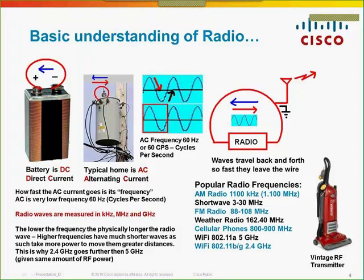If you look at the wall transformer, that's typically what you see — AC electricity around your home. If you had an oscilloscope to look at that AC, you would see a sine wave showing the electricity going back and forth. How fast that goes is cycles per second. In the early days of radio, cycles per second measured that rate. Now it's called hertz. AC is 60 cycles per second, or 60 hertz.